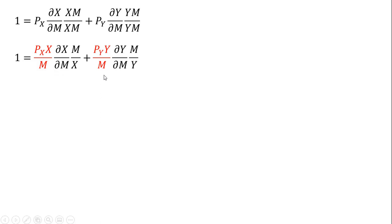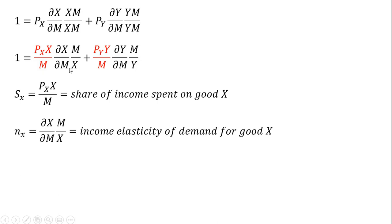And now let's interpret what we have on the right-hand side. This first term right here, the price of good X times X, that's just the total spending on good X divided by income. That's just going to be the share of income spent on good X. This next term is just the income elasticity of demand for good X.